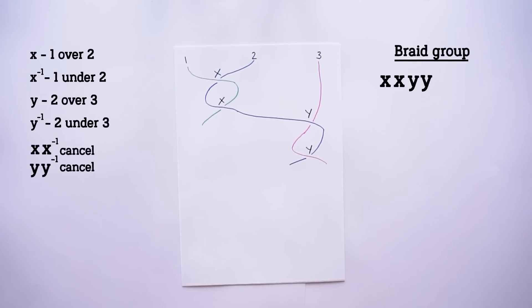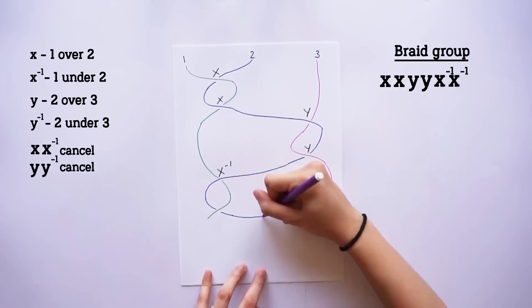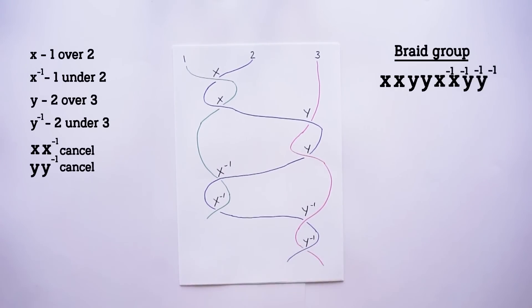Now because we want our terms to cancel out in the end, that means every x needs an inverse x and every y needs an inverse y. If we do two inverse y crossings now, they'll immediately cancel out the y's we just did, which isn't what we want. So let's try two inverse x's. Now we can do two inverse y's. So let's take a look at where we're at. If you remove all the y terms, the remaining x terms cancel each other out. And if you remove all the x terms, the remaining y terms cancel each other out. But when everything is together, nothing cancels. That's exactly what we want.